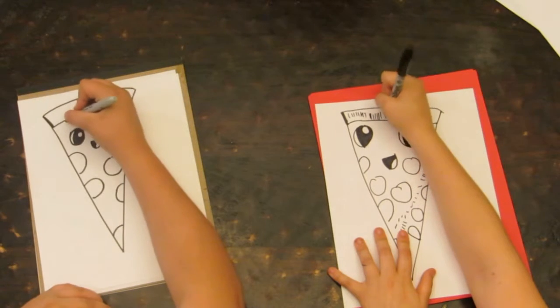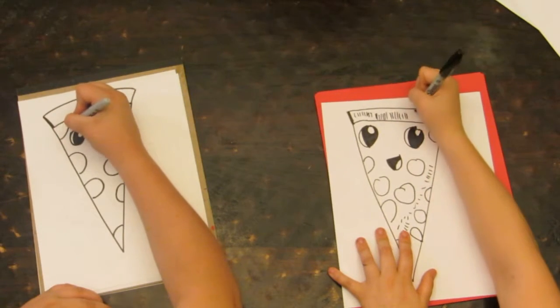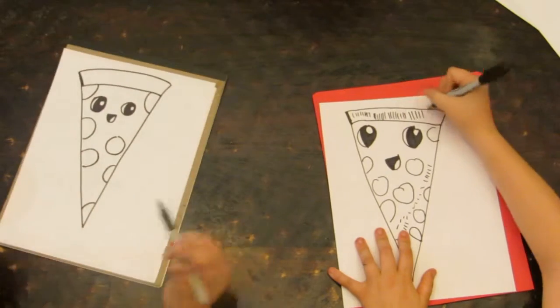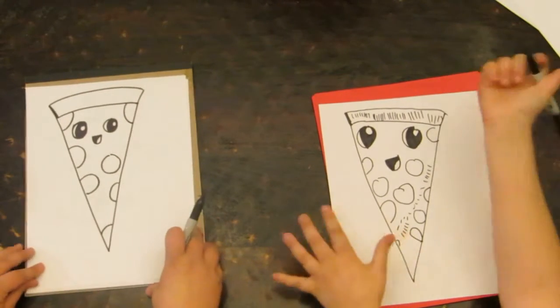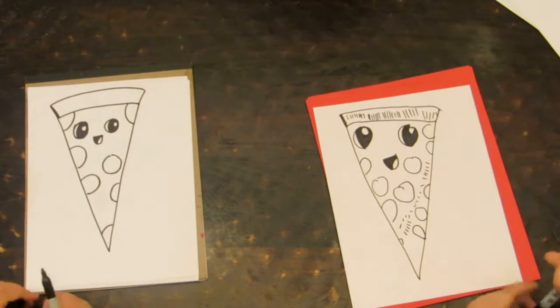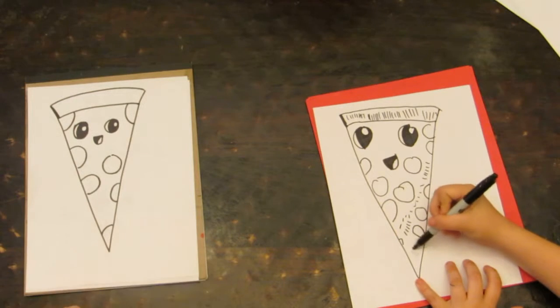So just draw some pepperoni. I'll draw one over here in the corner. Yeah, that's what I did. So there. Cheese. This is one of our quick draws. It's very quick. And there's our pizza.